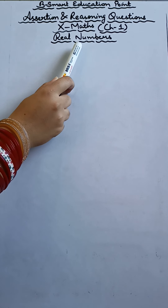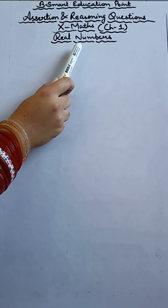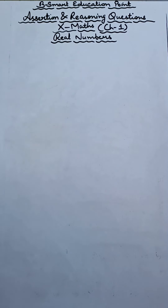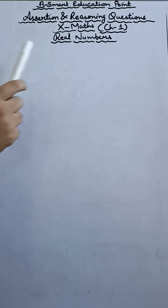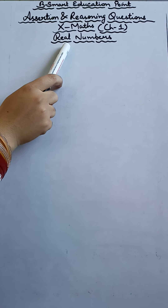In the previous video, we have already done about the options — what are the options of the assertion and reasoning questions. For basic understanding, kindly check the previous video. You can check the link in the description box. So let's start doing assertion and reasoning questions based on chapter 1, real numbers.